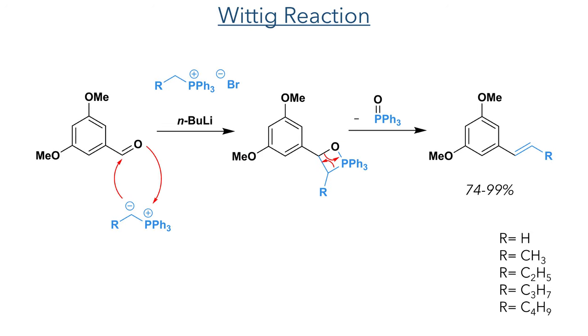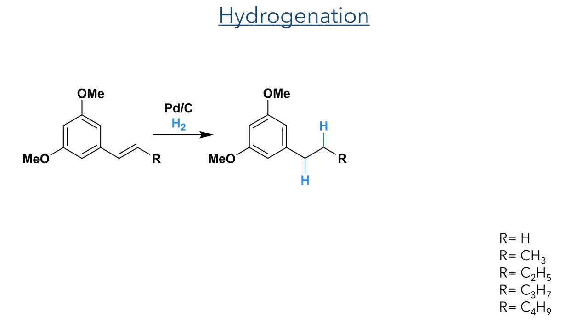Let's look at the synthesis and how the researchers made these allosteric modulators. The synthesis began with a Wittig reaction of dimethoxybenzaldehyde with the appropriate phosphonium salt in the presence of butyllithium as a base. This forms an oxyphosphetane intermediate which eliminates triphenylphosphine oxide to form the target alkene in quite good yields of 74–99%. This double bond was then reduced using hydrogen gas and palladium on carbon.